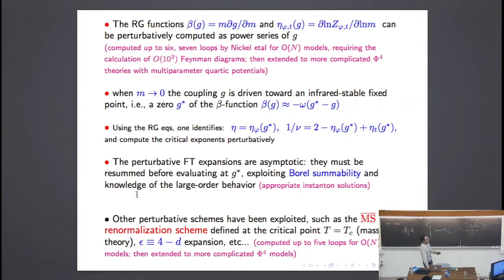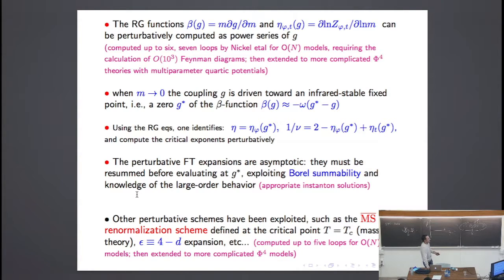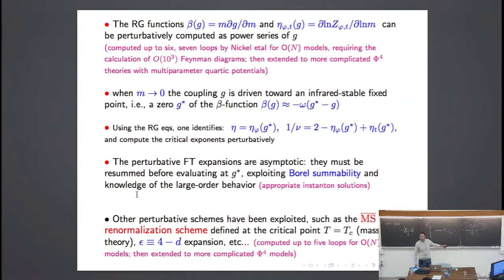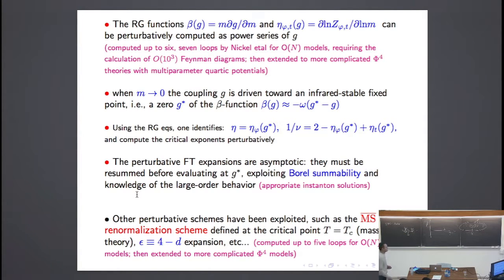When we compute the beta function, we determine its zeros and we can get information on the critical exponents, because there are simple relations between the two independent critical exponents and the RG functions introduced in the normalization group equations. One must be careful because these are perturbative expansions — they are asymptotic, not convergent. Accurate calculations can be done exploiting Borel summability, which has been proved by Parisi in the 70s, including instanton calculations to compute the large-order behavior of the perturbative expansions.